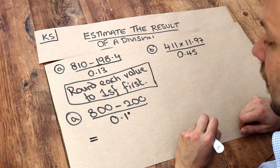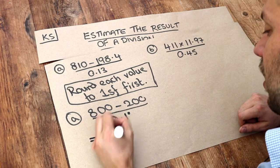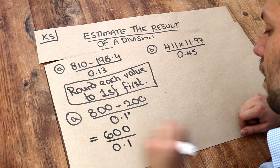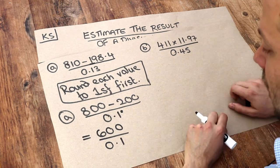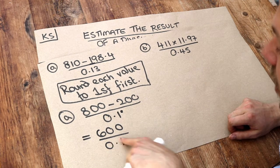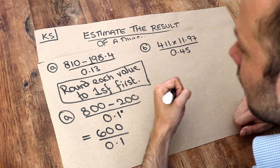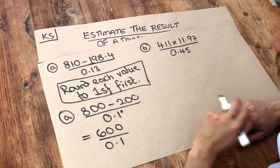Now let's simplify this. 800 minus 200 is 600 divided by 0.1. Now there's two ways to divide by 0.1. We could think of this as dividing by a tenth because 0.1 is a tenth. Now when we divide by a tenth, that's the same as multiplying by 10.